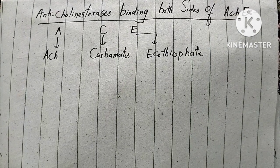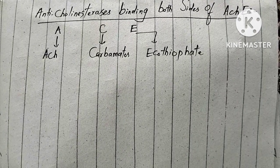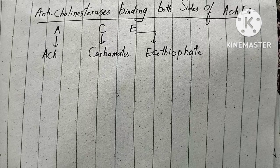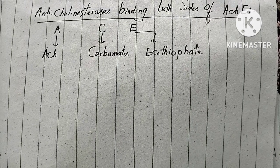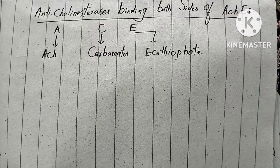So this mnemonic ACE: A stands for acetylcholine, C stands for carbamates, E stands for ecothiophate.